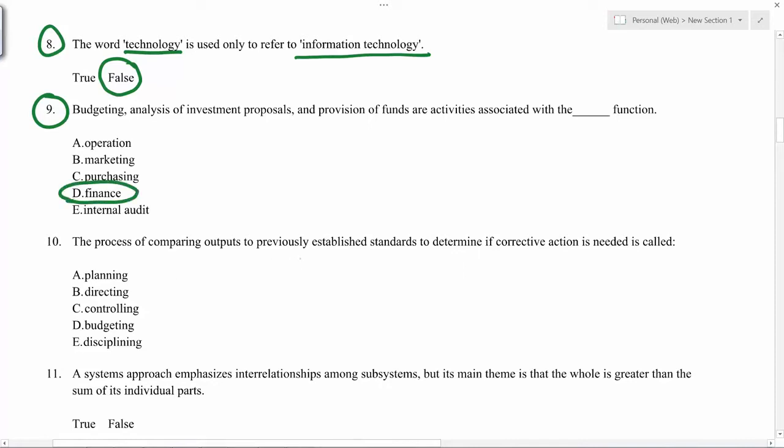The process of comparing outputs to previously established standards to determine if corrective action is needed. So basically you have some standard. You are comparing your output to that to decide whether some action will be needed. So that is called controlling.